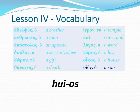Our last vocabulary word is huios. With the article it shows it's a masculine noun, translated 'a son.' With the article included, ho huios would be 'the son.' Also note the rough breather mark above the diphthong iota, so it would be huios, not uios. So huios means 'a son,' and ho huios, which is masculine, means 'the son.'